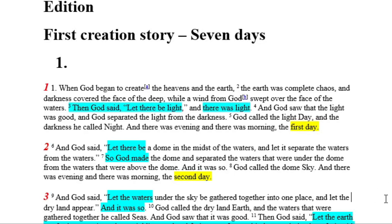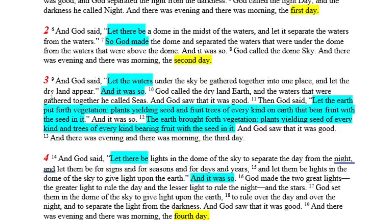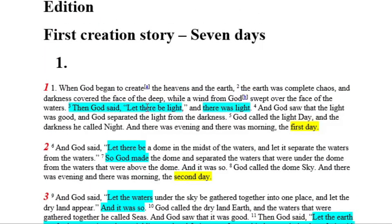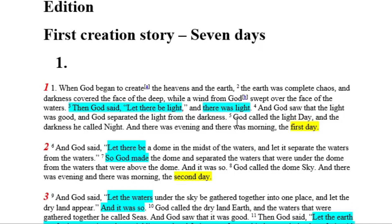So what we do is we go through each and every one of these — every one, there are seven of them. Seven days. Then God said, let there be, and there was. Day two: dome in the midst of the waters. Let there be, and so God made, there was.